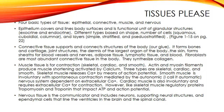Muscle tissue is a specialized tissue that can contract, and there are three types: skeletal, cardiac, and smooth. Skeletal and cardiac muscle cells have actin and myosin and other proteins arranged to make striations under the microscope. Cardiac muscle cells are connected by gap junctions, which allow ions to pass between the cells for contraction. Smooth muscles have actin and myosin in a different arrangement that is not striated, and smooth muscle usually lines the inside of organs like the stomach.